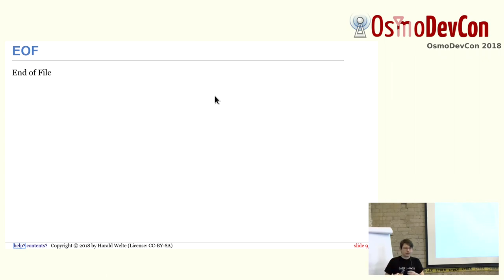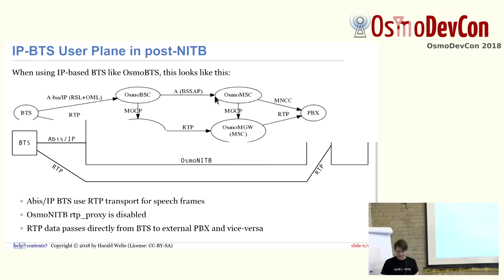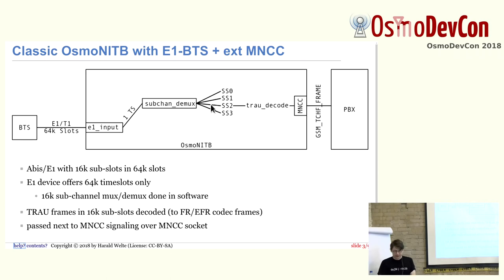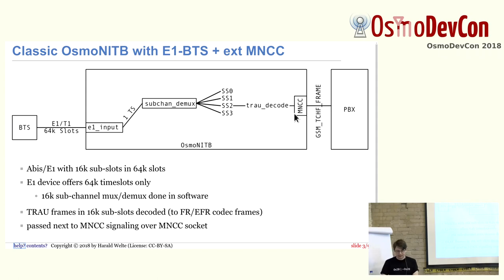Question from audience: You were talking about TCHF — what about TCHH? Answer: It's fundamentally the same. In the E1 system, it works the same way — every radio interface time slot is always connected to a sub-slot. Whether you have EFR, AMR, or half-rate, you have these sub-slots, and we already have this code in place. With the NITB, you can have a half-rate setup with a BS11. The frame format is different, but in OsmoNITB we do have this for EFR, FR, and HR.